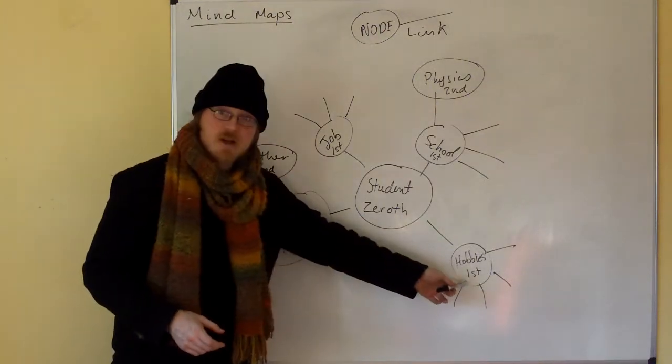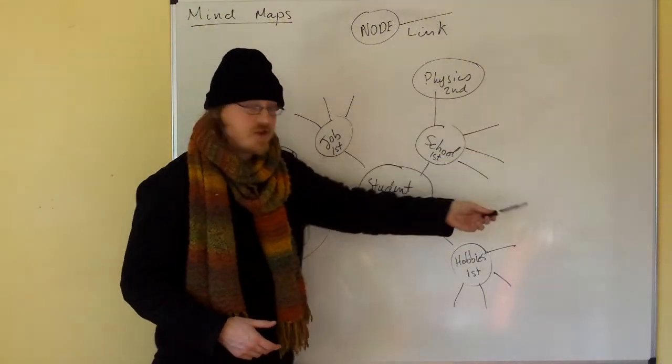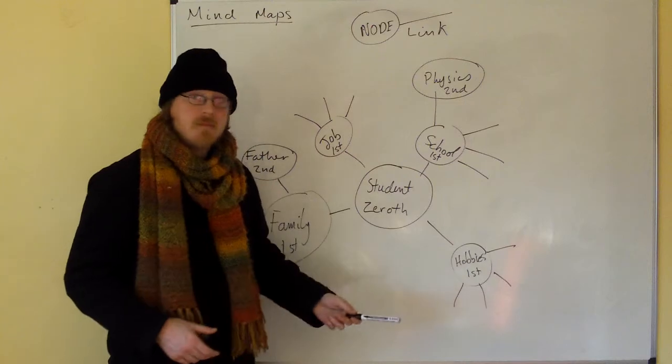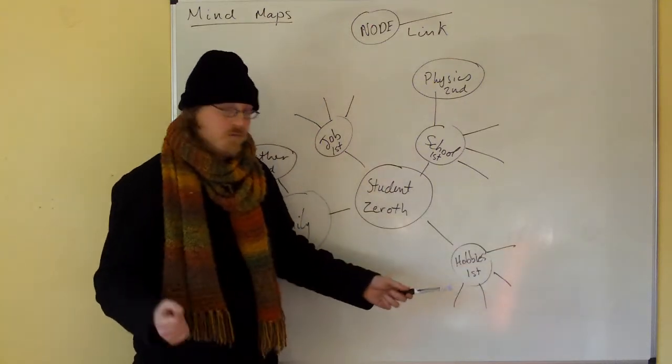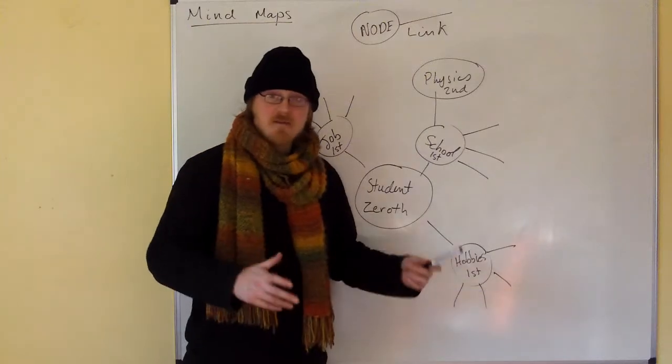So from school you might have coming off physics, maths, English, German. For hobbies, you might be a horse rider, or you might be a ski jumper, or you might be a bobsleigh enthusiast.